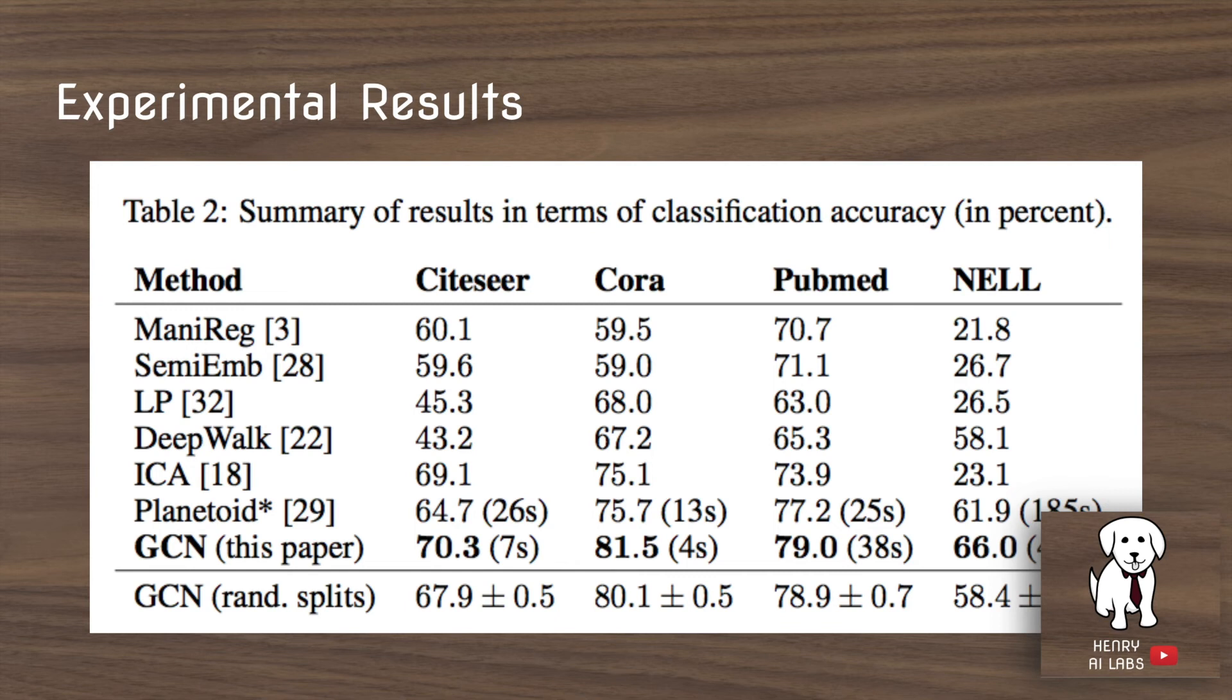So these are the experimental results of the GCN on these different datasets, outperforming all the previous techniques such as deep walk and planetoid.